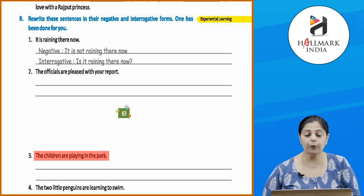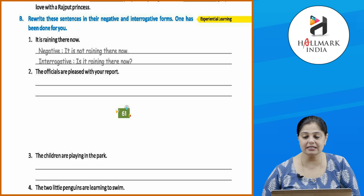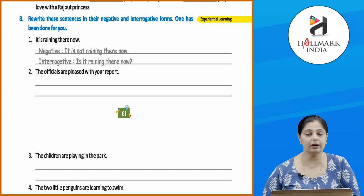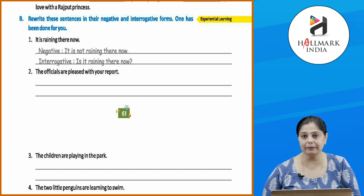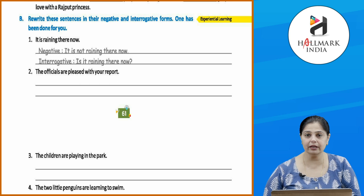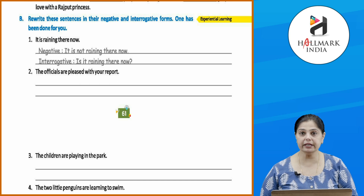Continuing the exercise: 'The officials are pleased with your report' — negative: 'The officials are not pleased with your report'; interrogative: 'Are the officials pleased with your report?' 'The children are playing in the park' — negative: 'The children are not playing in the park'; interrogative: 'Are the children playing in the park?' Now do exercise three: 'Do you believe in ghosts?' and 'What do your friends and family think about it?'